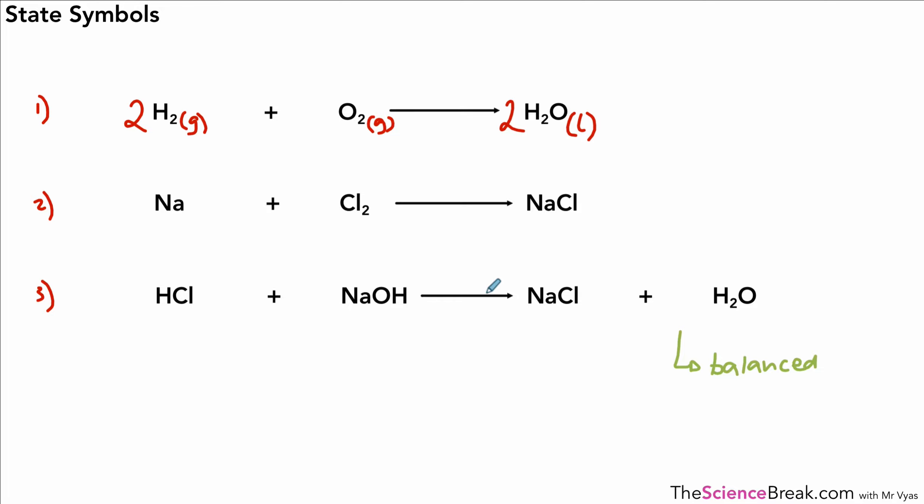The second one is not balanced, but you can have a go at that. It would balance like so. The 2 applies to the whole compound, not just the Na at the front, so that makes the Cl balance and the Na balance as well. Na is a solid (sodium metal), chlorine is a gas, and sodium chloride is a solid as a result of that reaction.